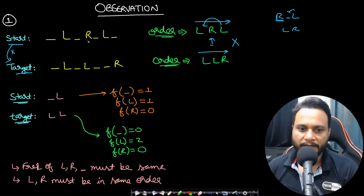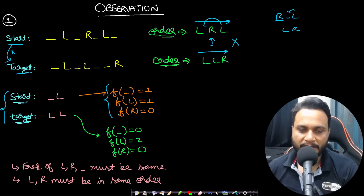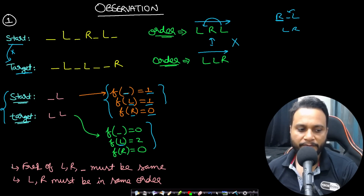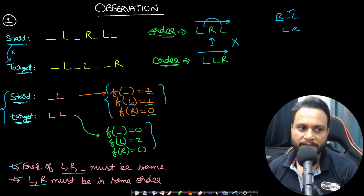Another observation: even if you have the same ordering, the frequency of all three unique characters must be the same. There must be exactly the same number of L and R pieces to match. Since the length is also the same, the underscore frequency will also be the same. The two important observations are: frequency of L, R, and underscore must be the same in both start and target, and the ordering of L and R must be exactly the same order when comparing start and target.